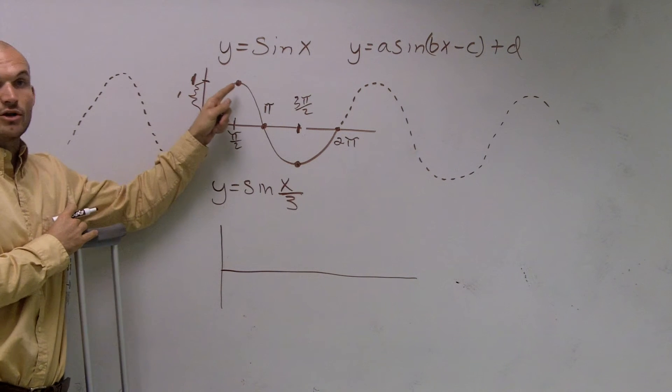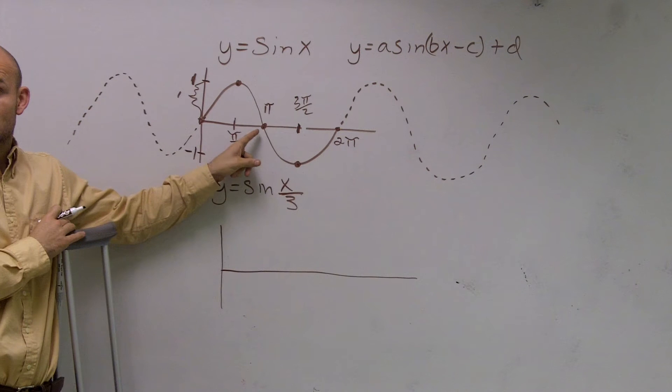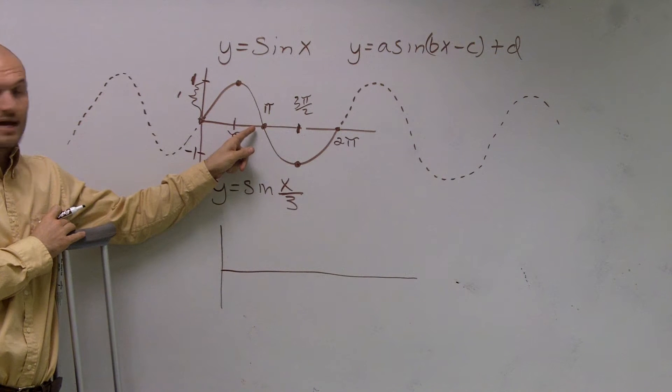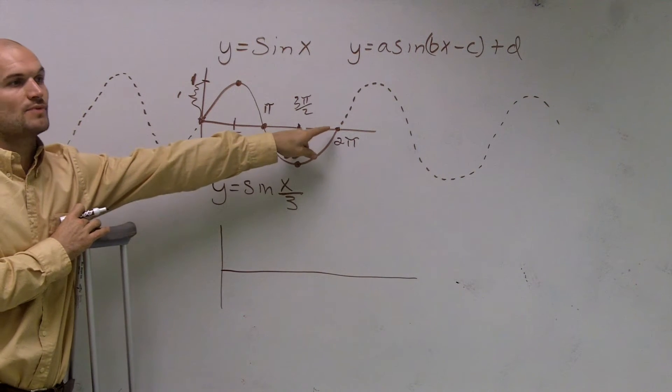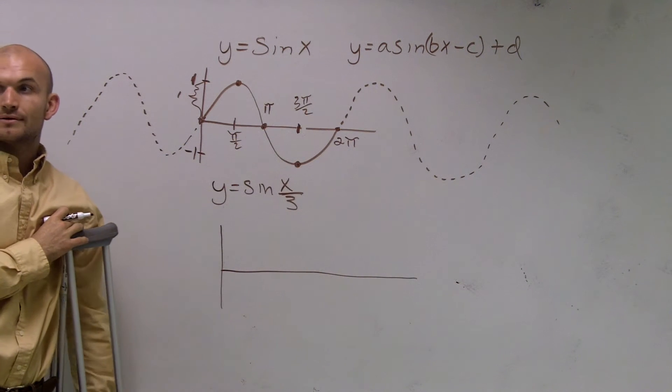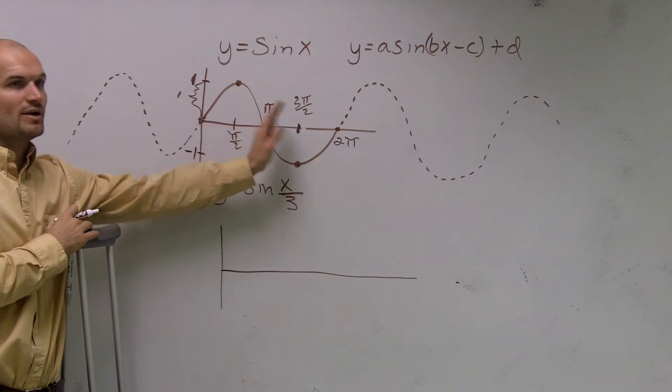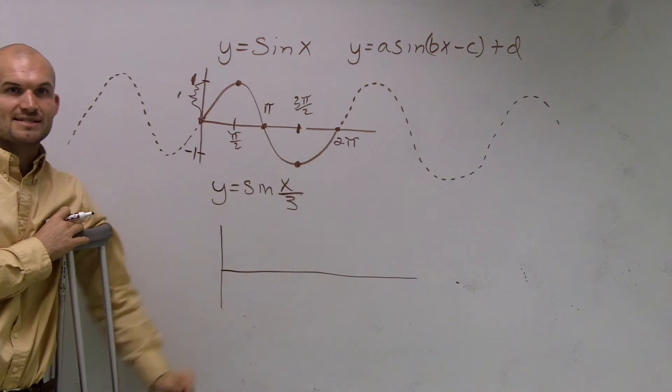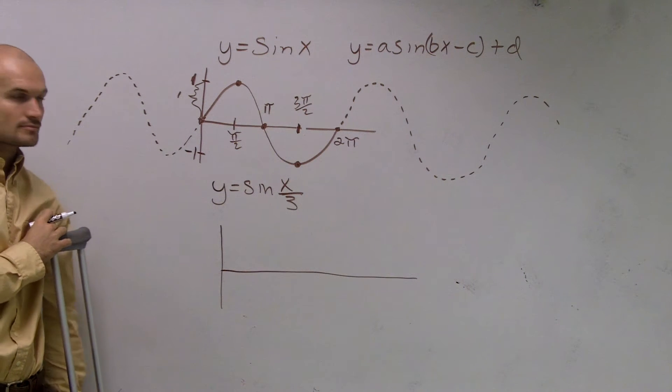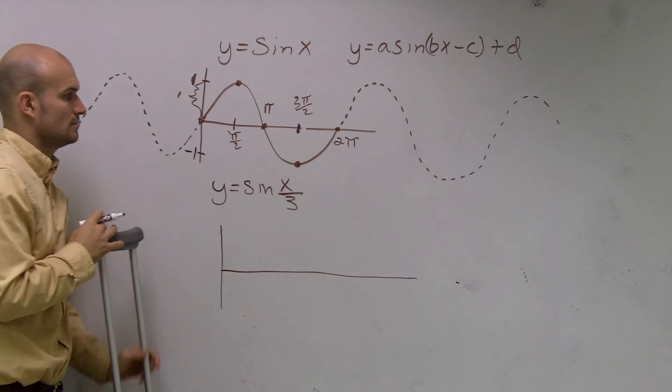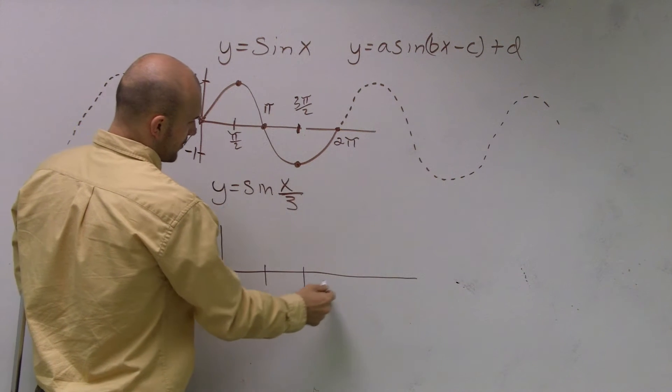The next point is what we call the maximum height. Then you go to where it crosses the intercept. Then we go to our minimum point. And then the last important point is where we go back to our starting point again. So there's going to be four important points. If you notice, each one of these four points are all evenly spaced out from each other. So I'm going to evenly space out four points.